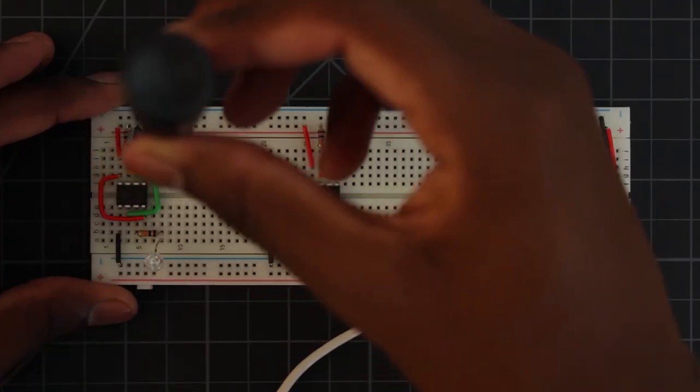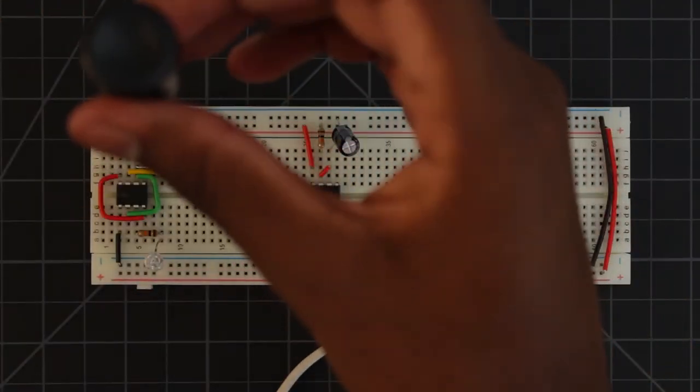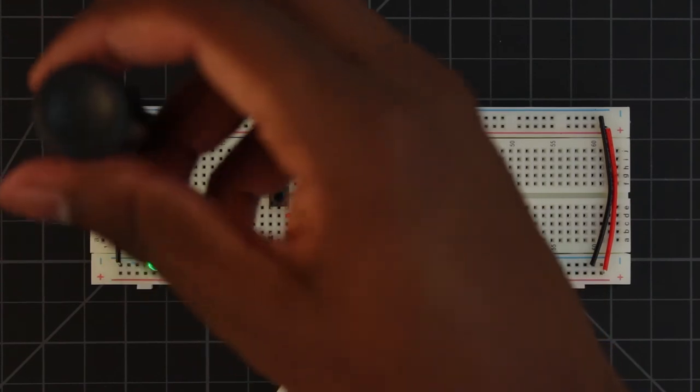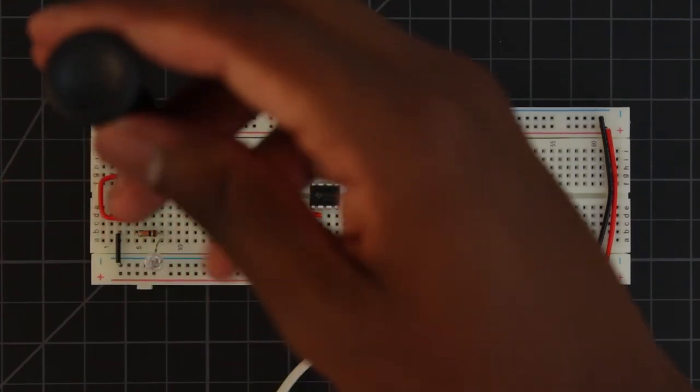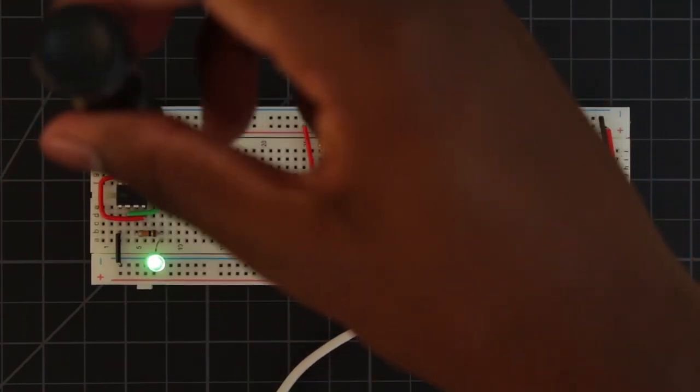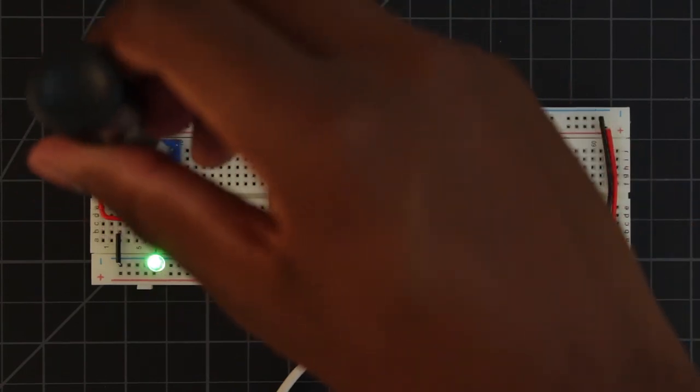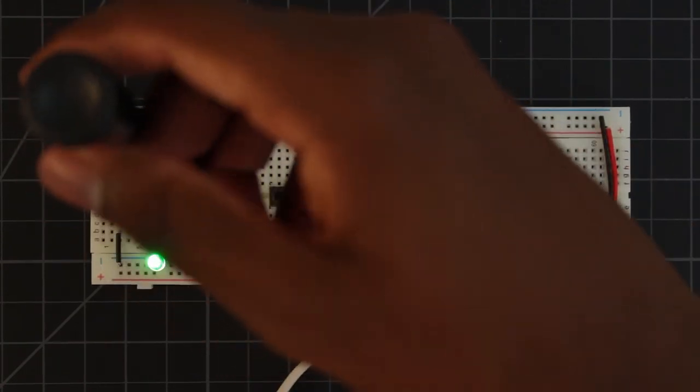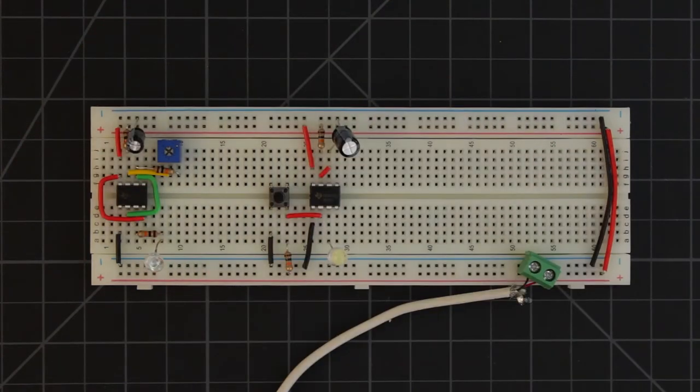Now it's important to note that the 10k resistor we added in series with the potentiometer is really important because it adds a minimum resistance value. Where before the potentiometer went from effectively zero ohms to one mega ohm, it now goes from 10k to one mega ohm plus 10k.